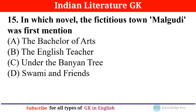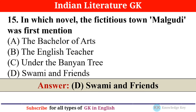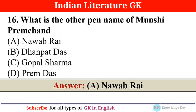Question number fourteen: From which year was the Sahitya Akademi Award started? — answer C: in 1954. Question number fifteen: In which novel was the fictitious town Malgudi first mentioned? — answer D: 'Swami and Friends.' Question number sixteen: What is the other pen name of Munshi Premchand? — answer A: Nawab Rai.